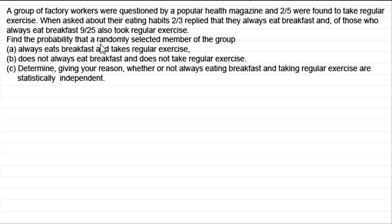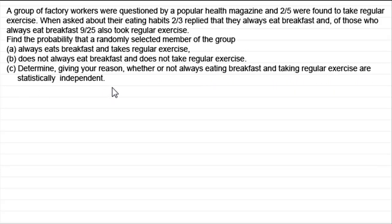What we've got to do is find the probability that a randomly selected member of the group: in part A always eats breakfast and takes regular exercise; in part B does not always eat breakfast and does not take regular exercise; and in part C we've got to determine, giving your reason, whether or not always eating breakfast and taking regular exercise are statistically independent.